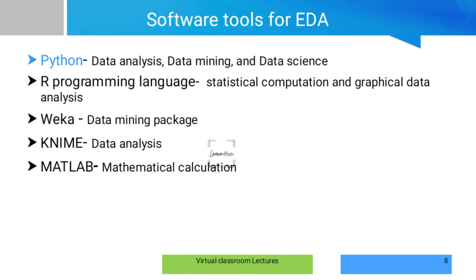Software tools for EDA include Python, R language, KNIME, MATLAB, and others. Python provides all the support needed: data analysis, data mining, data science, and mathematical calculations. Python is the best software for data analysis and data science because it has many library files and programming is easy.